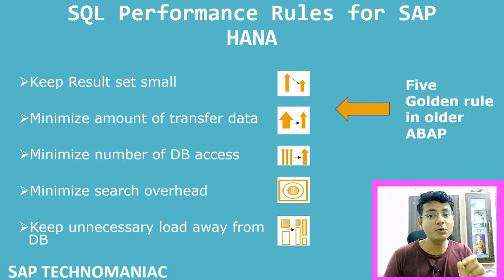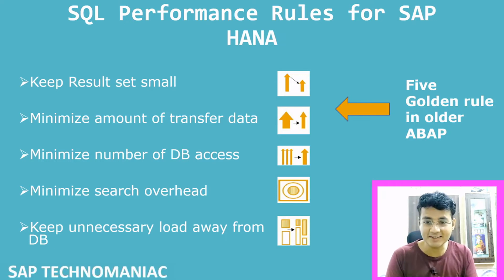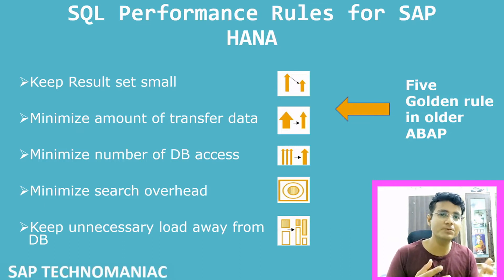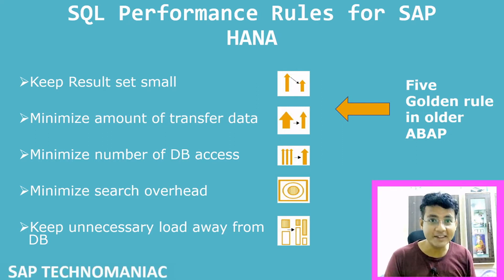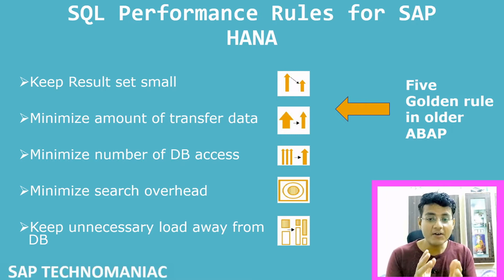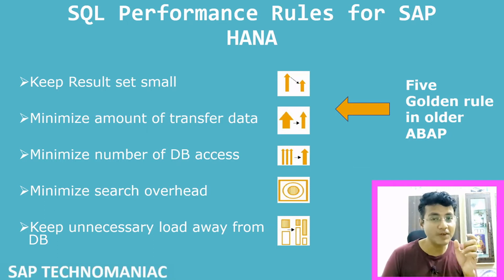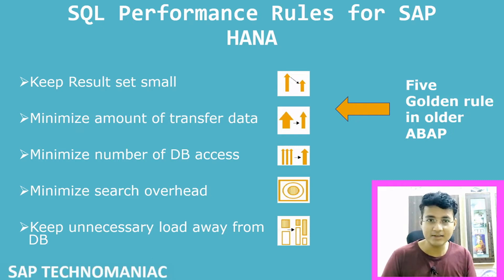The fourth rule is: minimize search overhead. As mentioned, to keep the result set small we use WHERE conditions. But when using WHERE conditions, we have to make sure we use primary or secondary indexes so that the database does not need to process the whole data. We have to use appropriate WHERE conditions using either primary or secondary indexes.